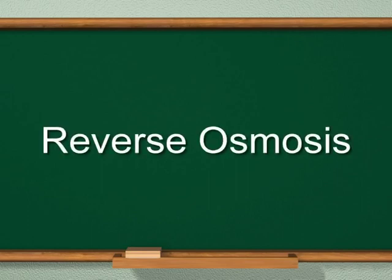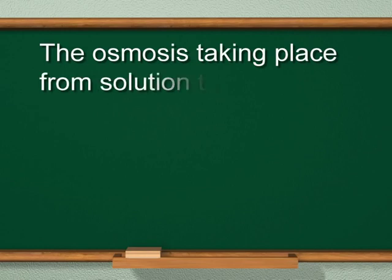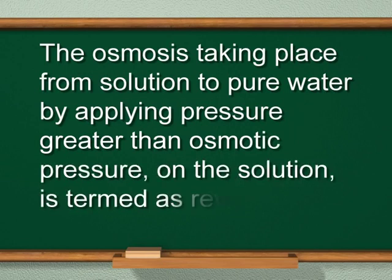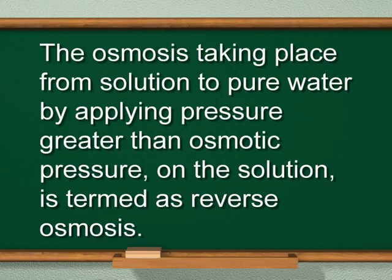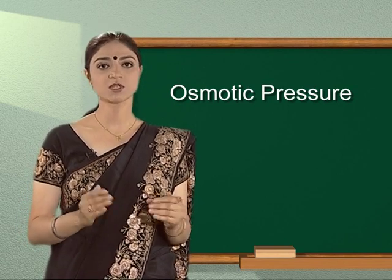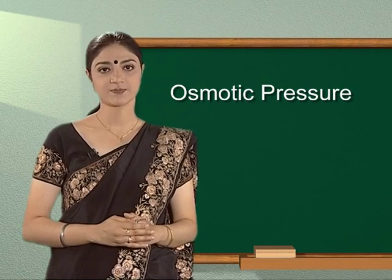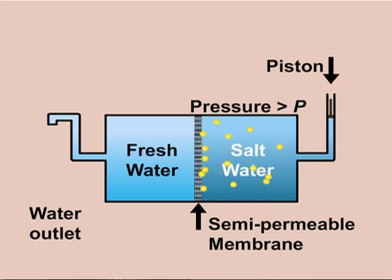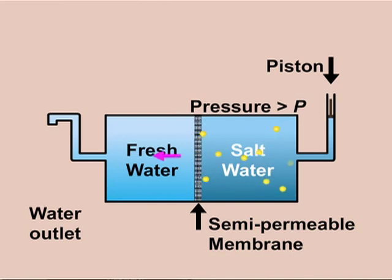Reverse osmosis is the osmosis taking place from solution to pure water by applying pressure greater than osmotic pressure on the solution. To reverse the direction of osmosis, a pressure larger than osmotic pressure is applied to the solution side. In the animation shown, fresh water is separated from salt solution by a semi-permeable membrane. When pressure is applied on the salt solution, the pure solvent flows out through the semi-permeable membrane. This phenomenon is called reverse osmosis.